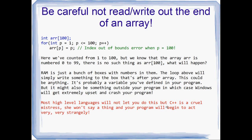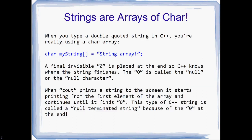A lot of high-level languages like C# and Java will pick you up on writing outside an array's bounds and say you're not allowed to do that. But C++ is a cruel mistress — it's not going to say anything. It just lets you write wherever you want in RAM and lets you deal with the consequences. If you write too far outside your array, you'll probably start writing on the pages of some other program in memory, and then Windows will pick you up and crash your program.